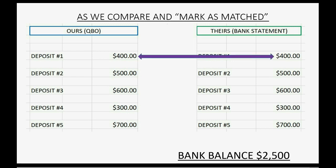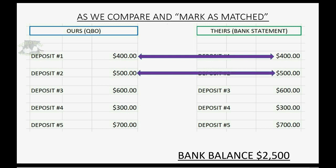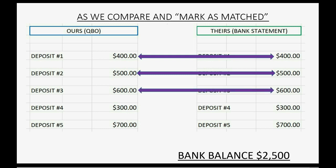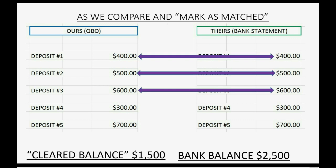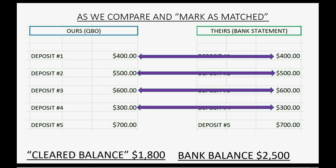If we mark off deposit number one as cleared, QuickBooks Online tells us that the cleared balance is $400 because it's the only one marked off as cleared. But then when we mark off deposit number two as cleared, QuickBooks Online says deposit number one and deposit number two are cleared, so they both belong as part of the cleared balance. Then we mark off deposit number three as cleared and QuickBooks Online will include all three deposits in the cleared balance. Then we mark off deposit number four and the cleared balance increases more.